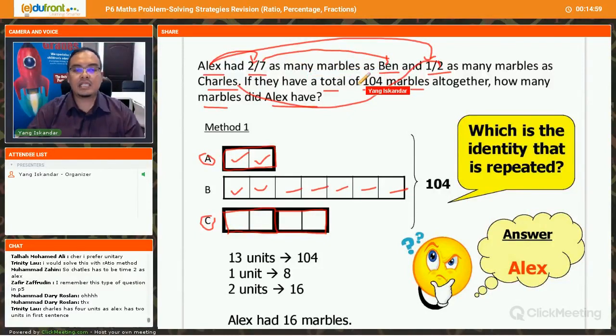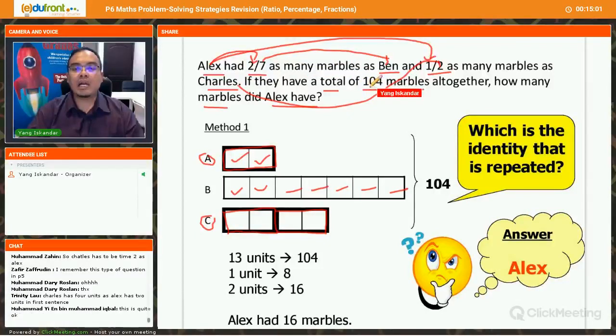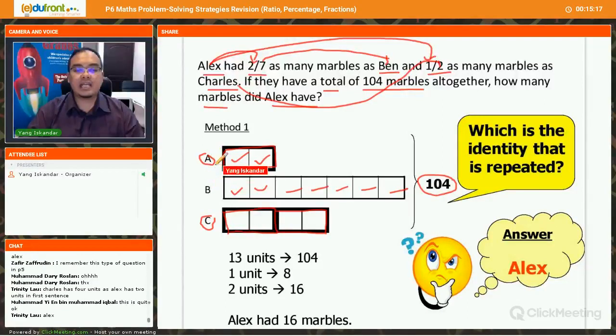Alright? And the next clue given to me is they have a total of 104 marbles altogether. So all of this number of units is 104. So you can see here, which is the identity that is repeated? Which is, it is Alex. Right? Alex repeated. First, Alex is being compared with Ben and then secondly, in the second clue, Alex is being compared with Charles.